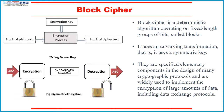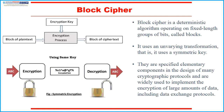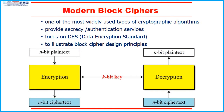First we will see about block cipher. A block cipher is a deterministic algorithm operating on fixed-length group of bits called blocks. It uses an unvarying transformation, i.e., it uses a symmetric key. Symmetric key means the same key is used during encryption as well as decryption. Block ciphers are widely used to implement encryption of large amounts of data, including data exchange protocols. Modern block ciphers provide encryption and cryptographic checksums to ensure contents have not been altered, providing secrecy and authentication services.